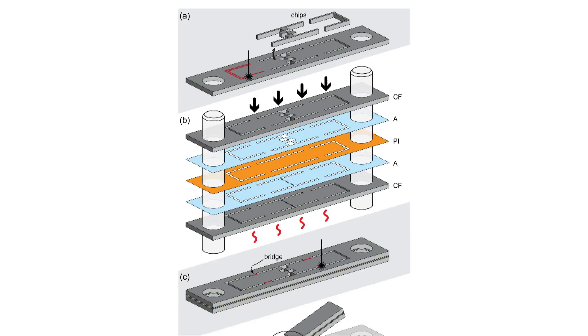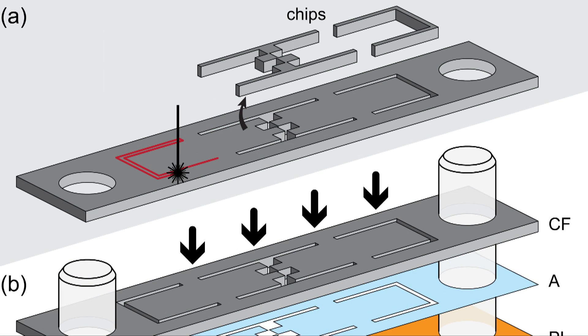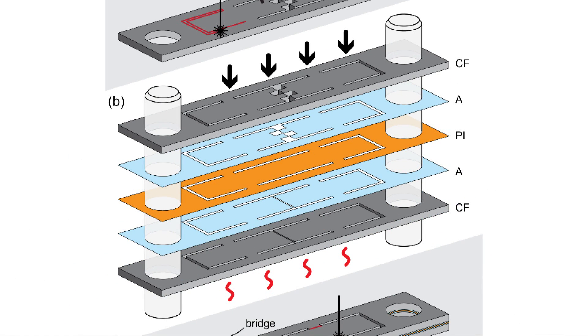Printed circuit MEMS fabrication begins with laser cutting complex patterns into thin layers of structural materials and adhesives. These layers are stacked and aligned using precision pins.